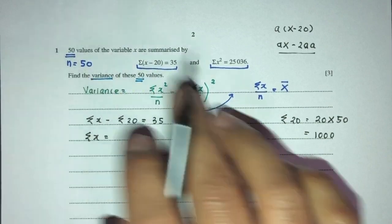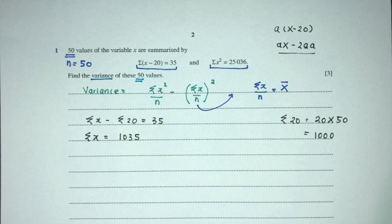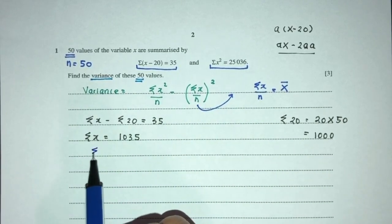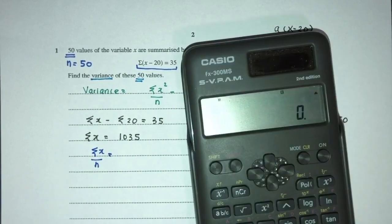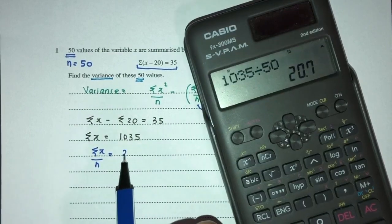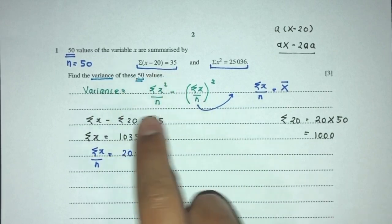So we have this here and this over here. You will have 1,035 for the value of summation of x. Now to find this one, divide by n. So summation of x divided by n will be 1,035 divided by 50, that should become 20.7. Here you go. So now we have this already.